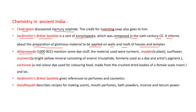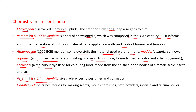Atharva Veda, around 1000 BCE — BCE means Before Current Era — mentions some dyestuffs. The materials used were turmeric, madder, indigo, opium, orpiment (a bright yellow mineral consisting of arsenic trisulfide, formerly used as a dye and artist pigment), and cochineal (a red dye made from dried female scale insects). Varaha Mihira's Brihat Samhita also gives references to perfumes and cosmetics.